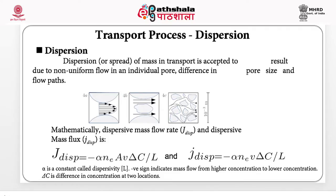Mathematically, dispersion is defined as the dispersive mass flow rate J_disp, which equals a constant called dispersivity (with dimension of length) times the discharge Q times the concentration gradient delta C over delta L. The negative sign refers to flow from higher concentration towards lower concentration. If you are interested in flux, we divide the dispersive mass flow by the area, giving negative alpha·Ne·V·(delta C / delta L). Ne is the effective porosity, which quantifies the connected pores in the porous medium.